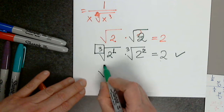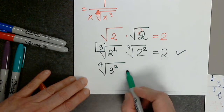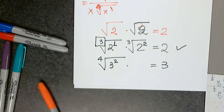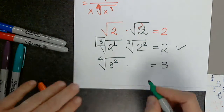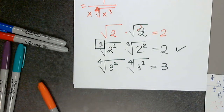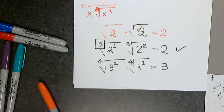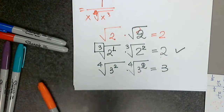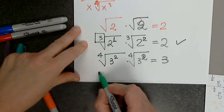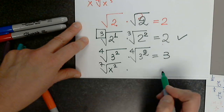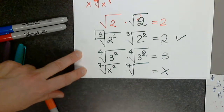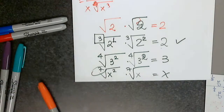One more: if I have the fourth root of 3 squared and I want to multiply it by something to get plain 3 — I need to form a perfect fourth. I have two 3s, I'm missing exactly 2 more. What about the seventh root of x squared? It must be the seventh root of x to the fifth — forming a perfect seventh.